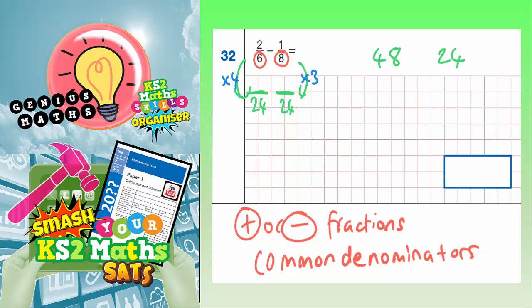So whatever we do to the bottom numbers, we must also do to the top numbers to get an equivalent fraction. So if I've gone 6 times 4 to get 24, I need to do 2 times 4 to get 8. And if I times the 8 by 3 to get 24, I must also times the 1 by 3 to get 3. So my equivalent fractions to 2/6 and 1/8 are 8/24ths and 3/24ths.